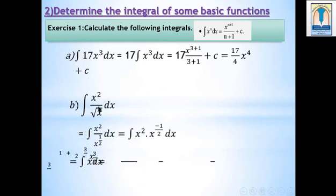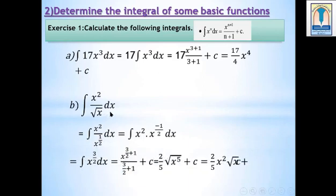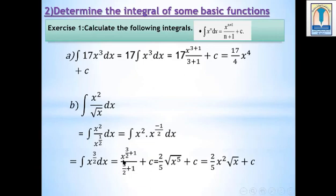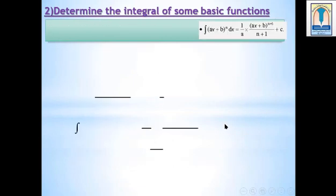Part B: Integral of x squared over radical x dx. This integral needs simplification. Radical x equals x to the power one half, so x to the power one half in the denominator becomes x to the power minus one half in the numerator. The integrand simplifies to x to the power 3 over 2. Applying the power rule, we get x^(3/2+1) over (3/2+1), where 3/2+1 equals 5/2, giving 2 over 5. Since x to the power 5/2 is radical x to the power 5, the result is 2 over 5 times x squared radical x plus c.